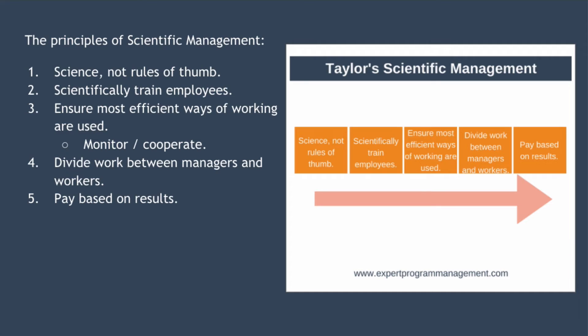The fourth principle is to divide work between managers and workers. Managers should be responsible for developing the processes, ways of working, and ways of monitoring employees. Employees should be responsible for executing a task as quickly as possible. The final principle is pay based on results — workers should be paid based on how much they produce using piece rate pay. The use of piece rate pay forces workers to increase their production; if they don't produce, then they don't earn.